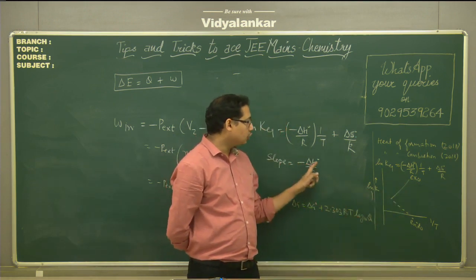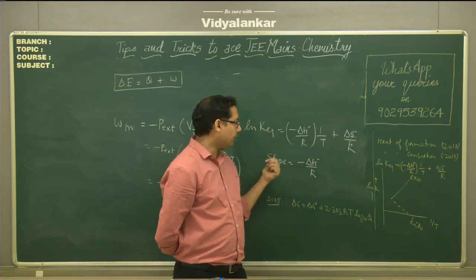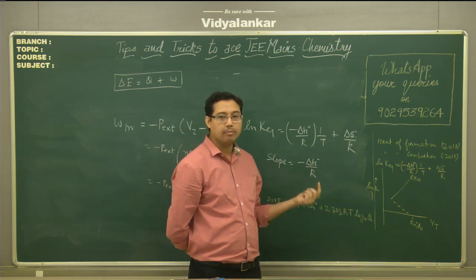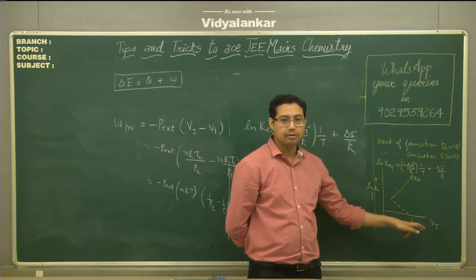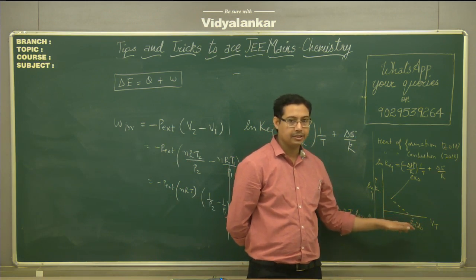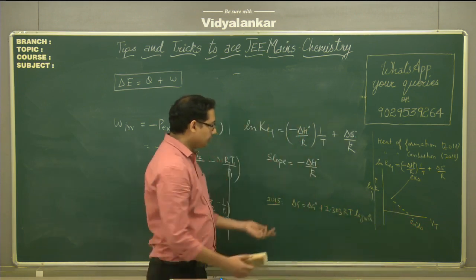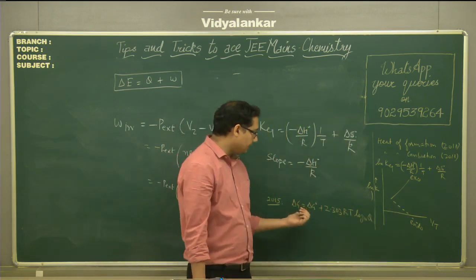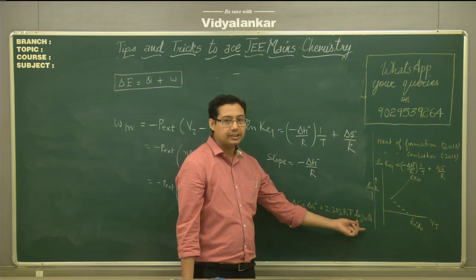If the slope of the ln K vs 1/T graph is negative, then ΔH is positive — meaning the reaction is endothermic. Then the question arises: how does ΔG get correlated with the reaction equation?